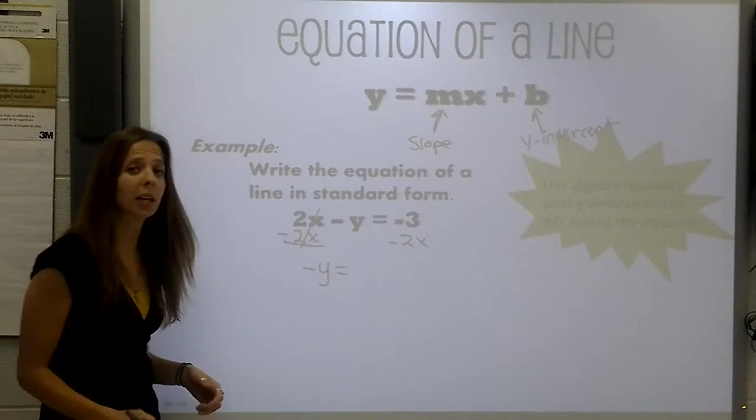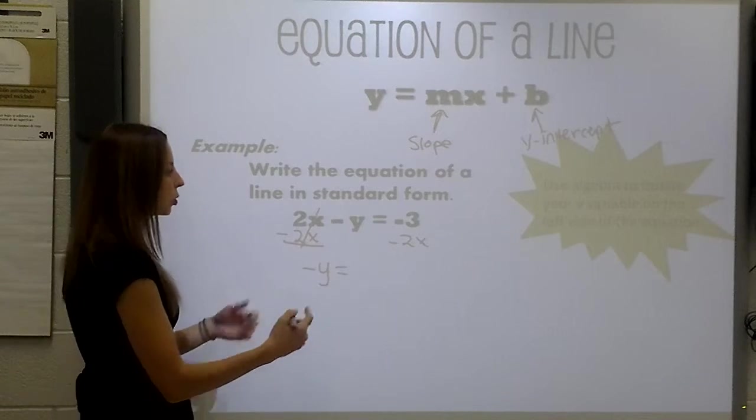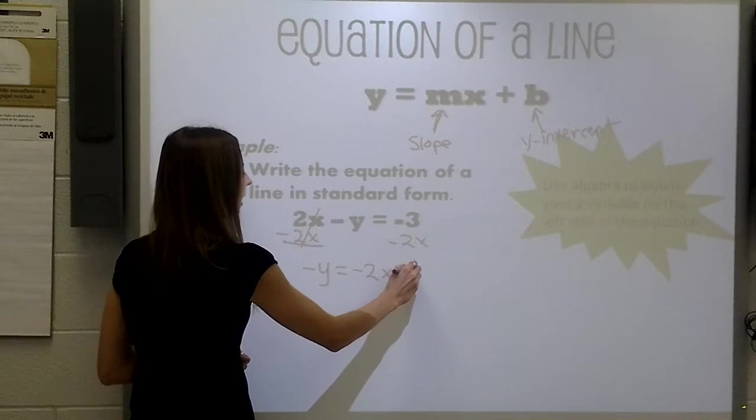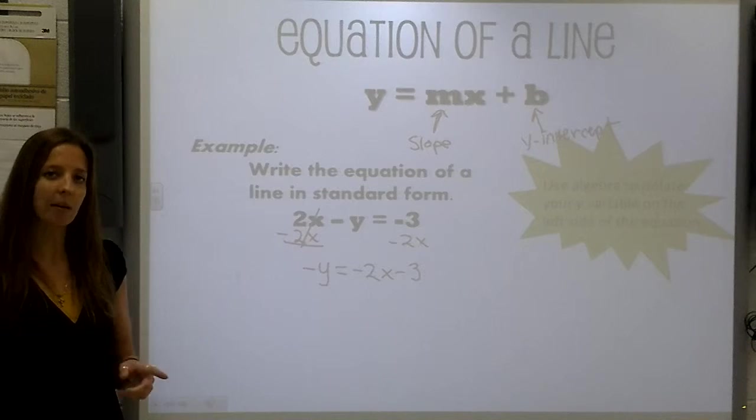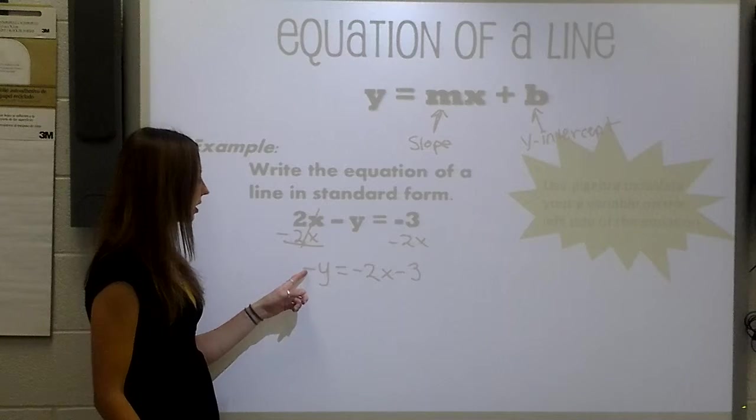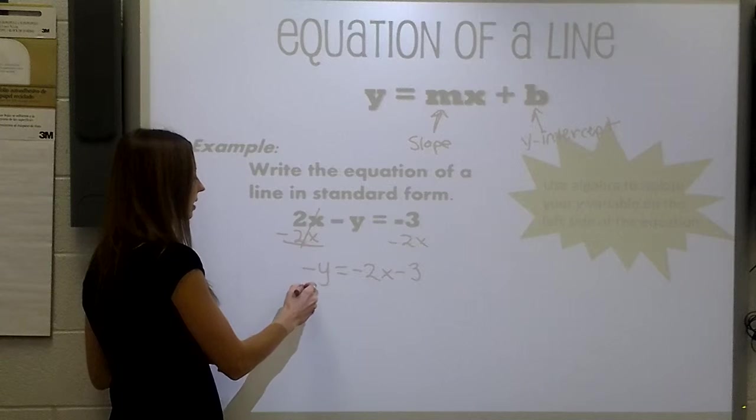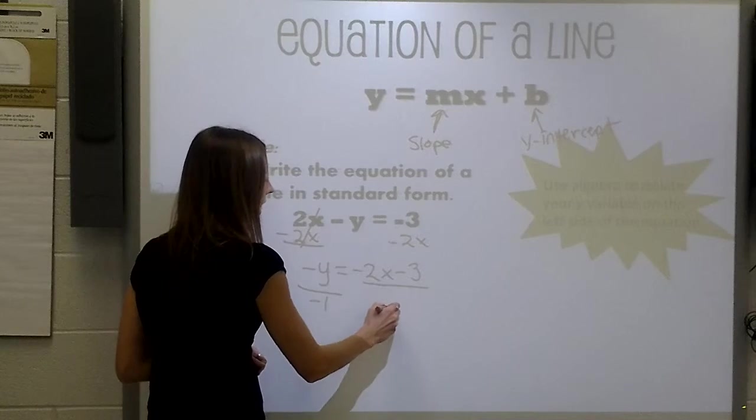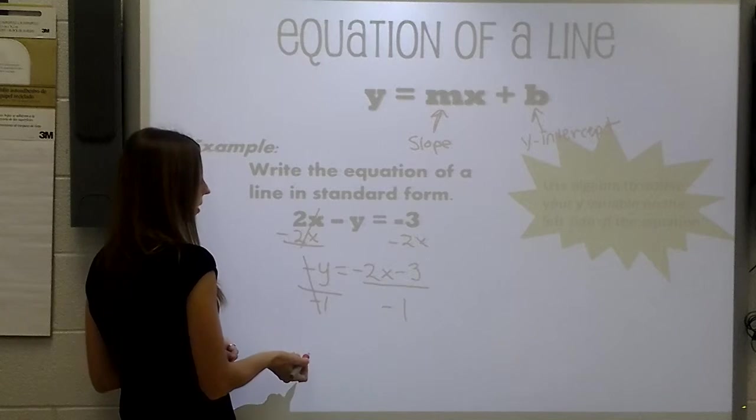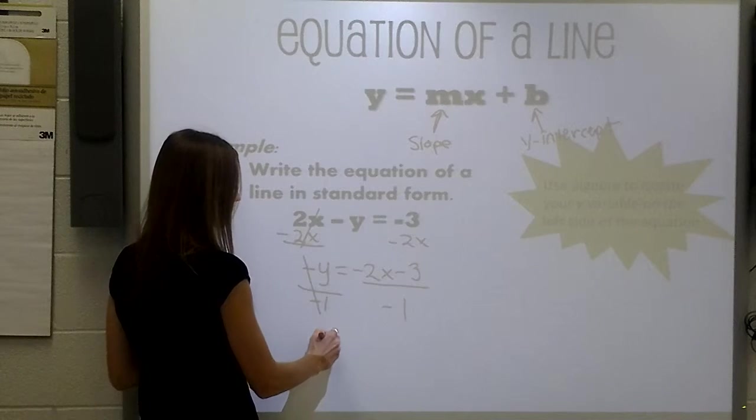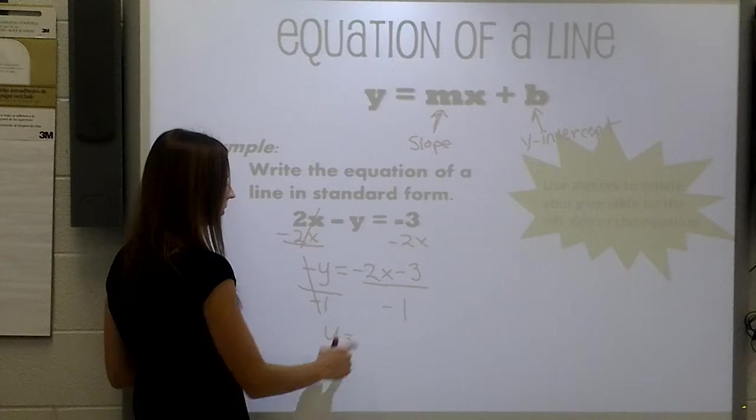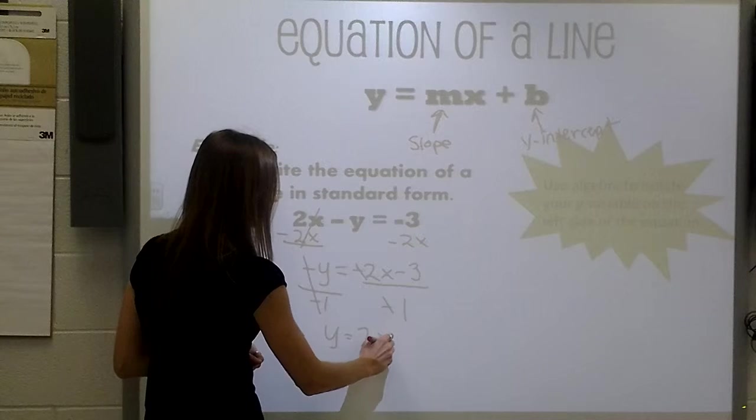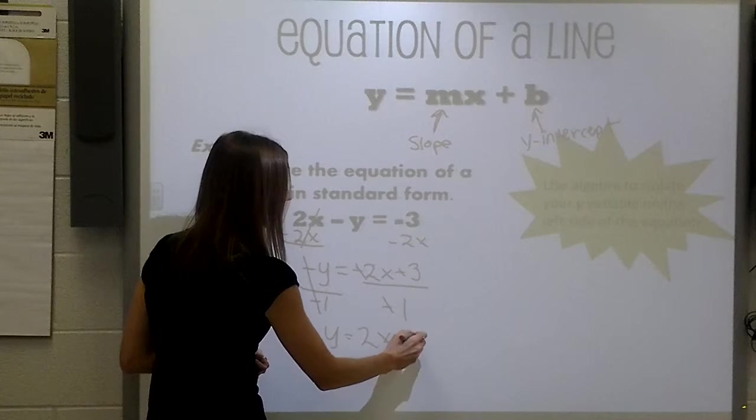Now, we cannot combine these unlike terms, so we are just going to rewrite them as negative 2x minus 3. The last step here is that we still want to get our negative y and just make it positive, which means we would have to divide by negative 1 on both sides of the equation. That way the negatives will cancel out and we will have y by itself. These will also cancel, so we will have a positive 2x plus 3.